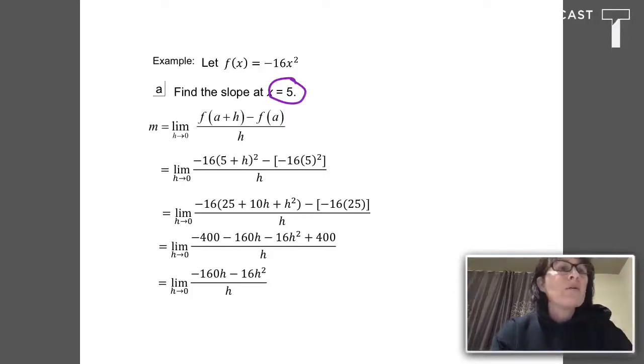So what does it mean to F of A plus H in this case? Well it's what we just practiced a second ago. I need to take A plus H and square it and multiply by negative 16. So in this case 5 plus H is getting squared and multiplied by negative 16. F of A is just going to be negative 16 X squared with 5 plugged in.